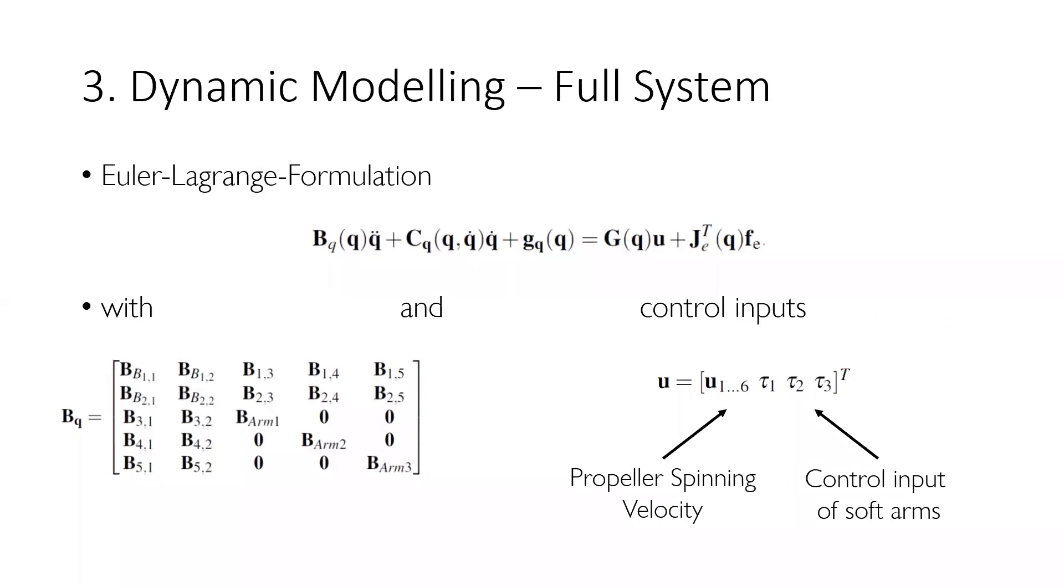The dynamics of the full platform are as well modeled using the Euler-Lagrange formulation. For a full derivation of the single elements, we refer you to the paper. The final inputs to the system are now the six rotor spinning velocities U, and Tau are the control inputs of the arms.